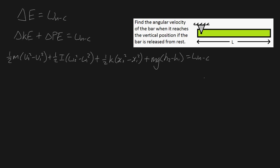That is the full formula. Don't be scared to approach this problem like this — a lot of these terms will become eliminated. First of all, because we're not dealing with springs or compressible objects, the spring potential energy term will be equal to zero. Likewise, if we choose to view this object as pure rotation about point O — which is our pin support — then our translational component will also be equal to zero. We're viewing this as pure rotation about our pin.